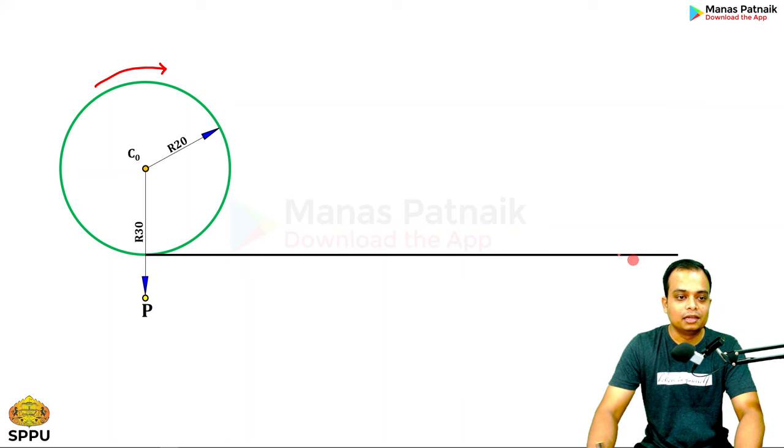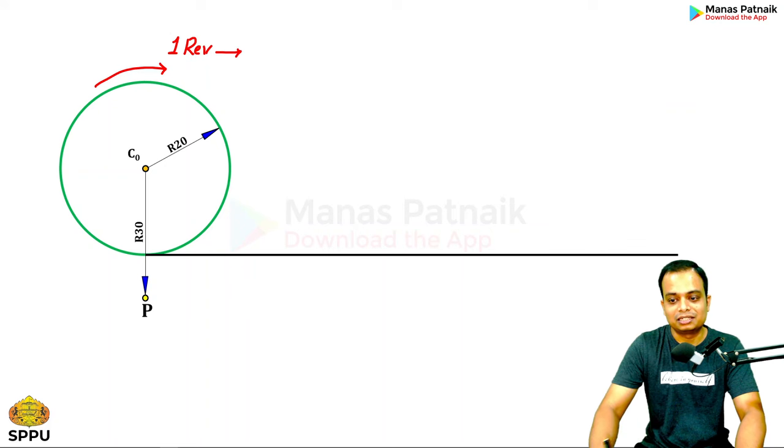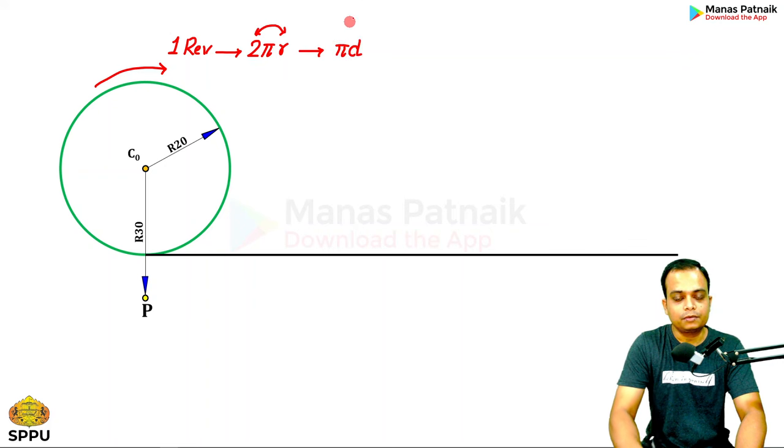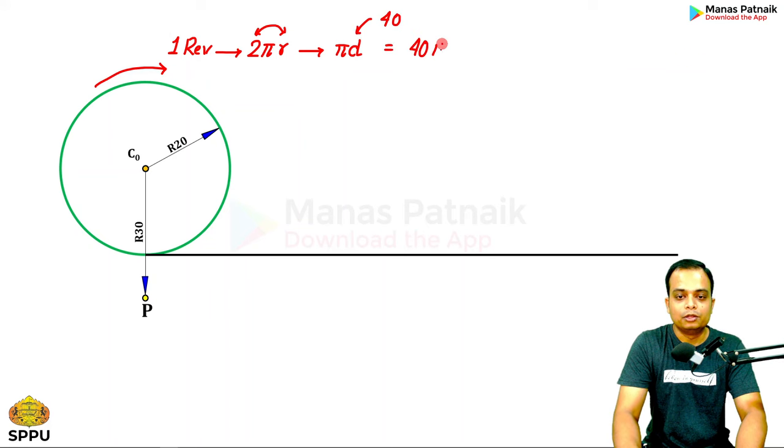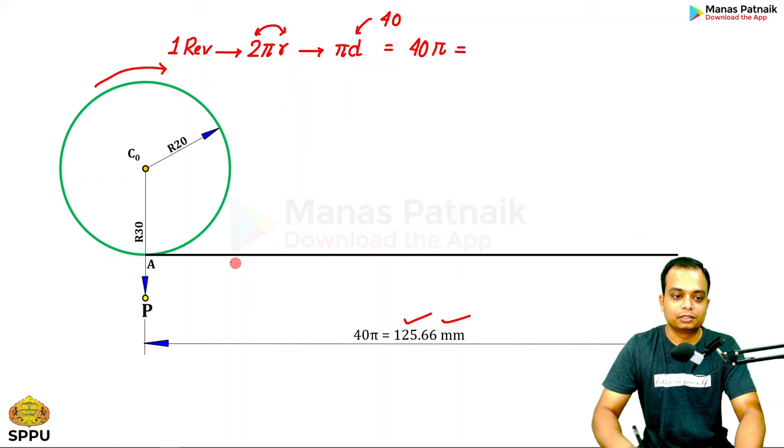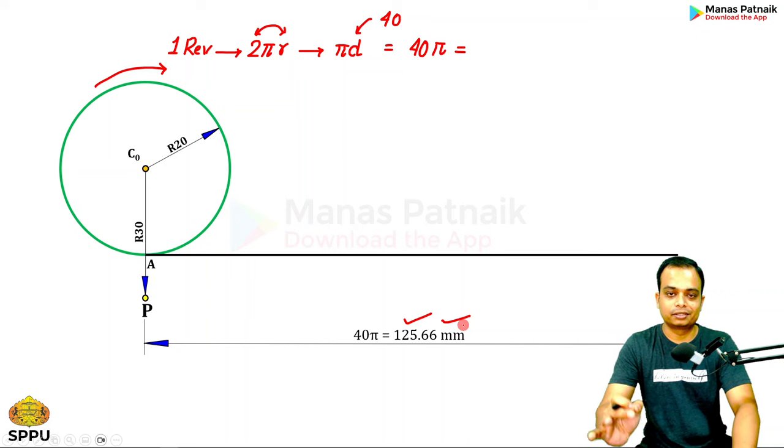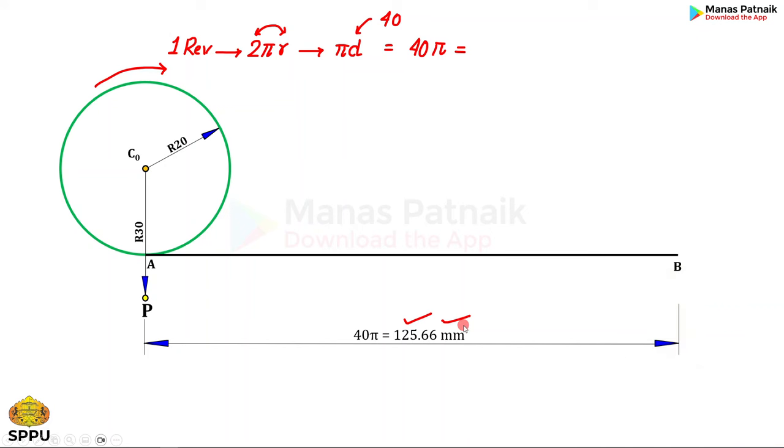Sir, what is the length of the line? Sir, we are actually going for one revolution. In one revolution, this distance is going to be equal to 2πr, or you can say 2 into r will make a diameter. You can also write it as π into d. Sir, d happens to be 40, so this is going to be equal to 40π. So please do the math. This is going to work out as 125.66 millimeters. So this straight path will be equal to 125.66. Is this clear to everyone? Yes, sir.